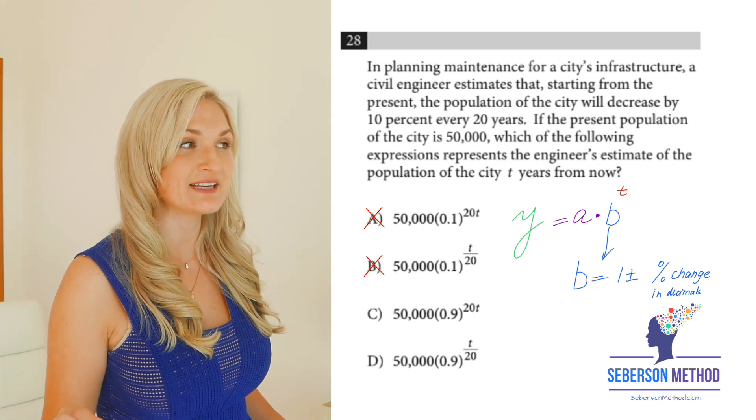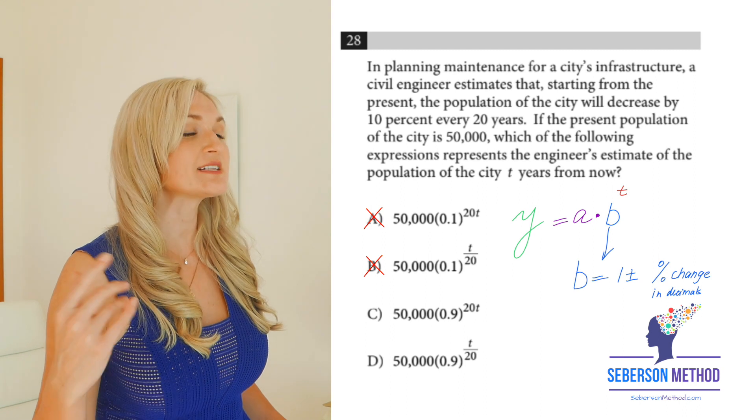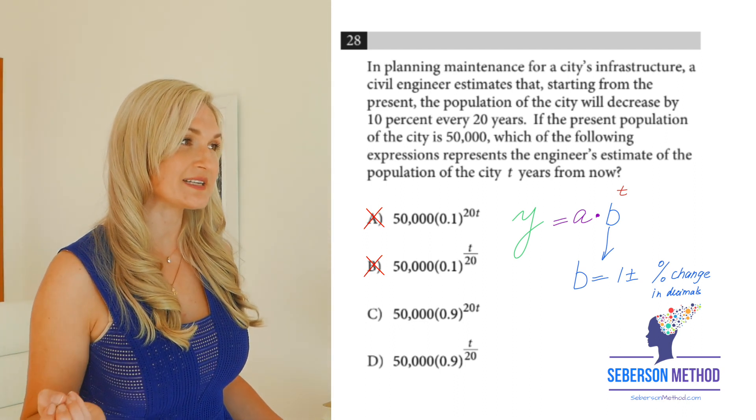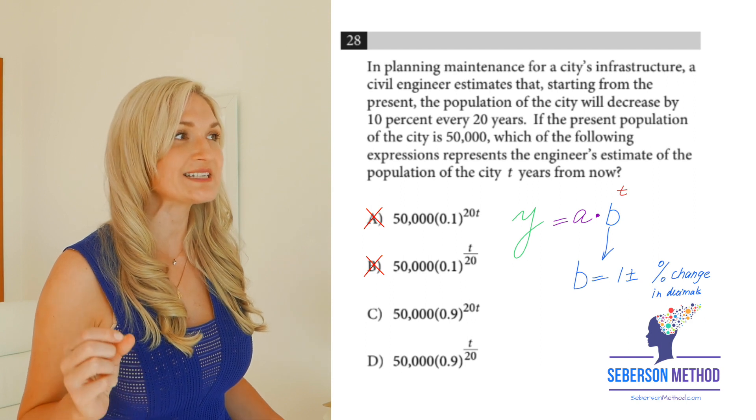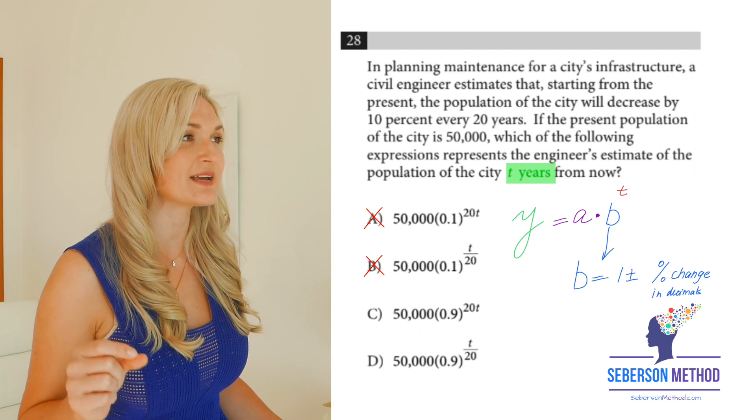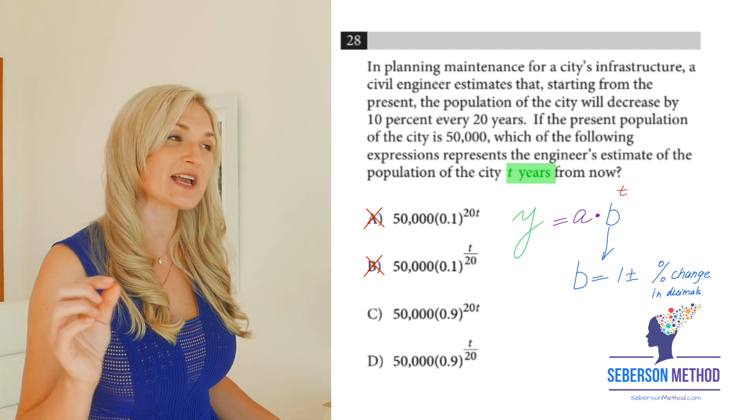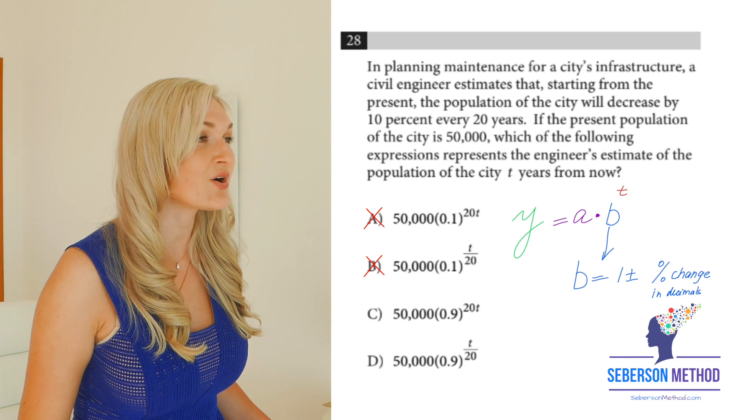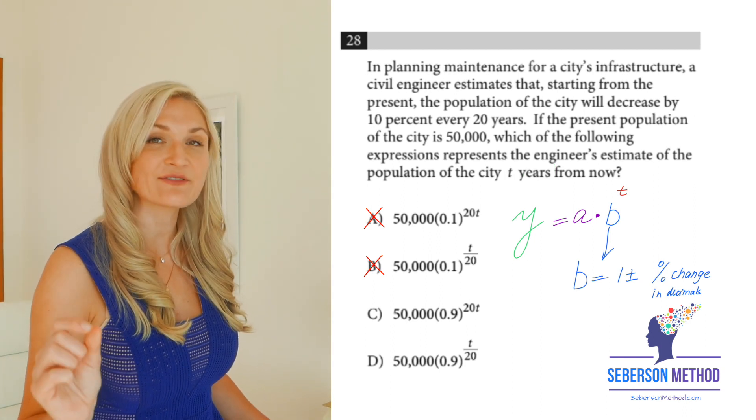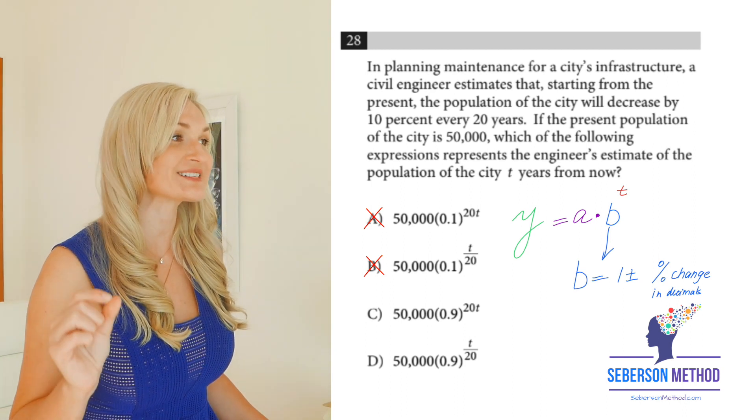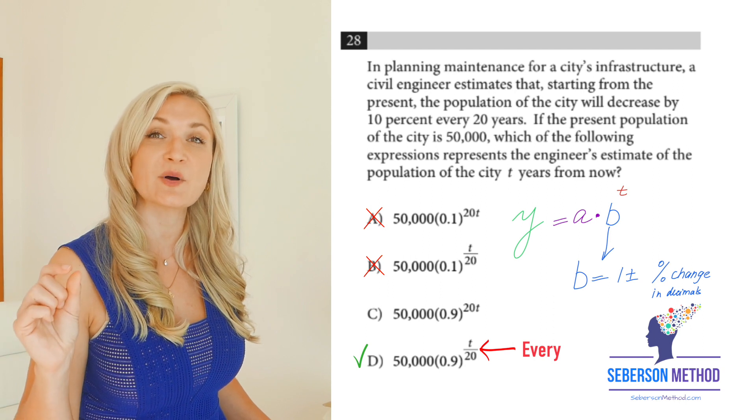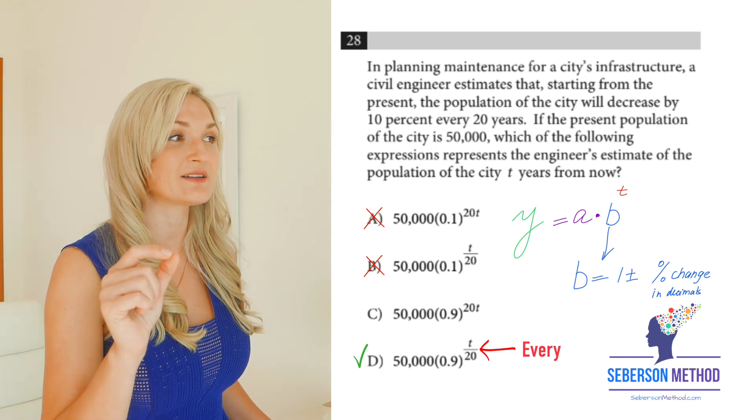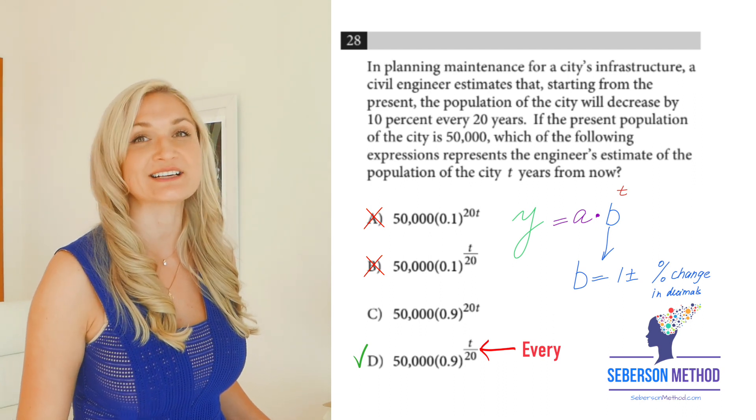But is it going to be 20 times T or is it going to be T over 20? Let's try to sound out C. 50,000 people decrease by 10%, 20 times. What is T in? T is in years, 20 times a year. Is that exactly what's happening? Do you see how it is? 20 times T, 20 times a year. Is that what's happening based on the word problem? No. 10% gets decreased every 20 years. So the right answer is D. Whenever there's a fraction in the exponent, we think of that fractional line as every. Every, and then we go into denominator, 20, and then back in the numerator, years. Every 20 years.